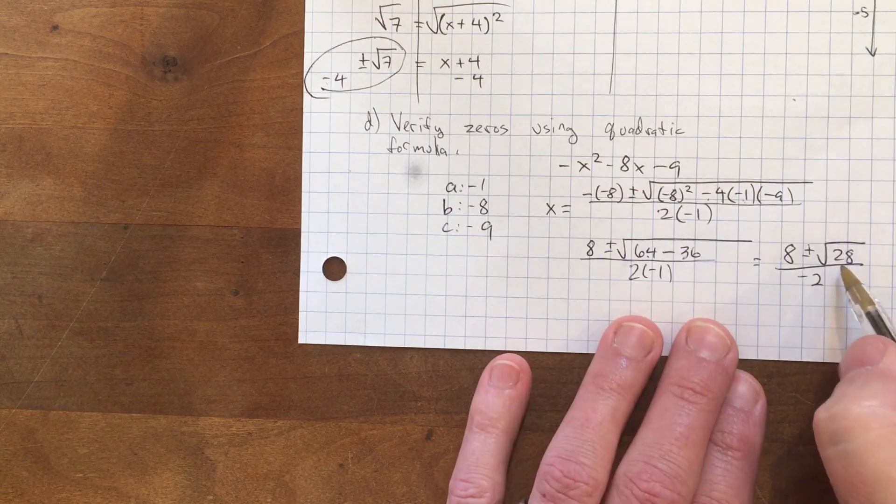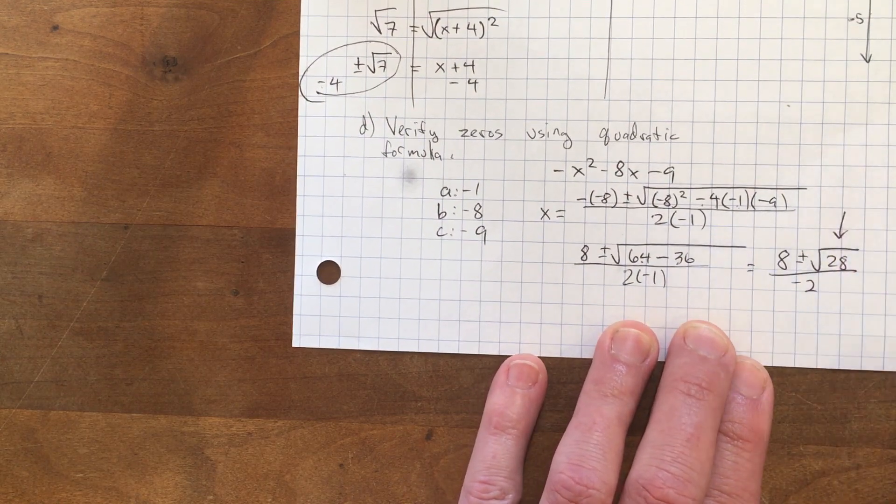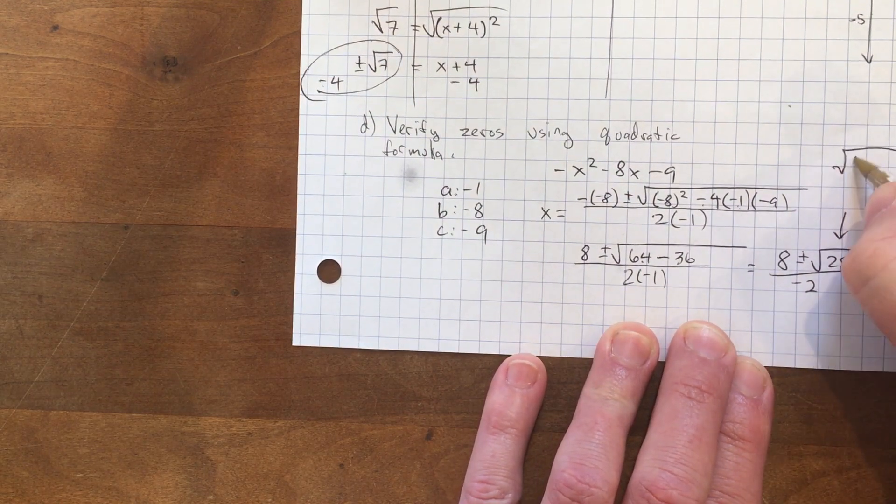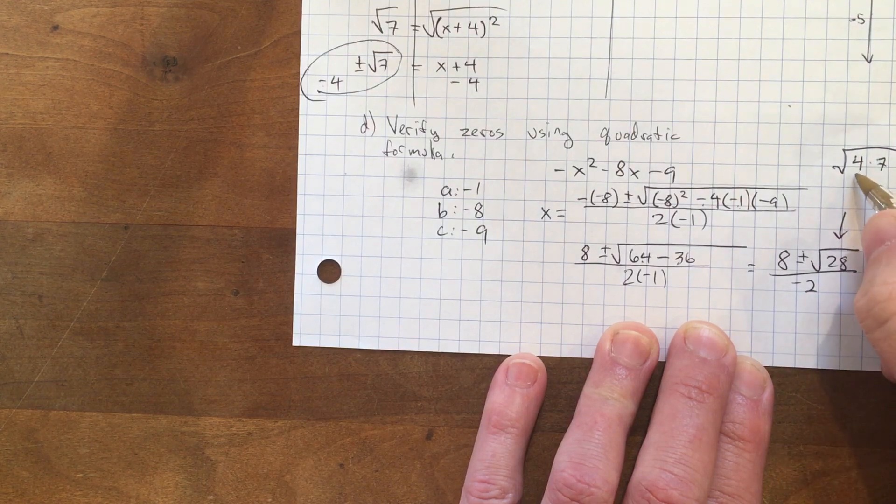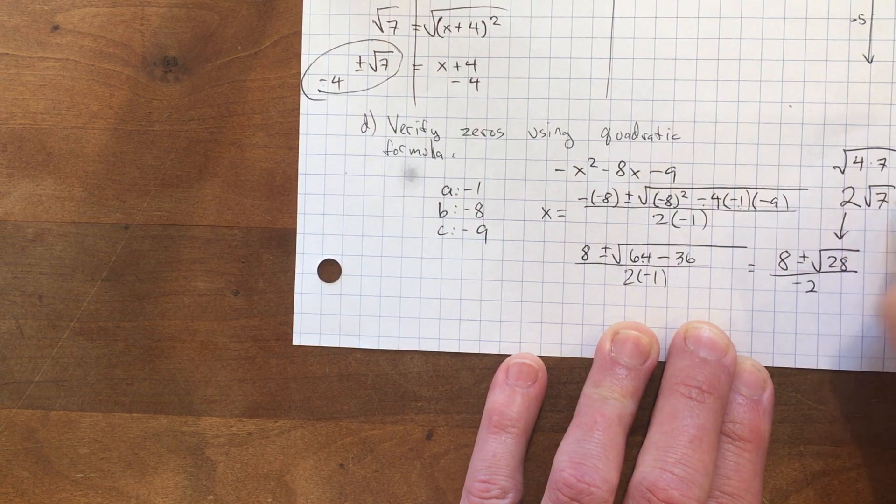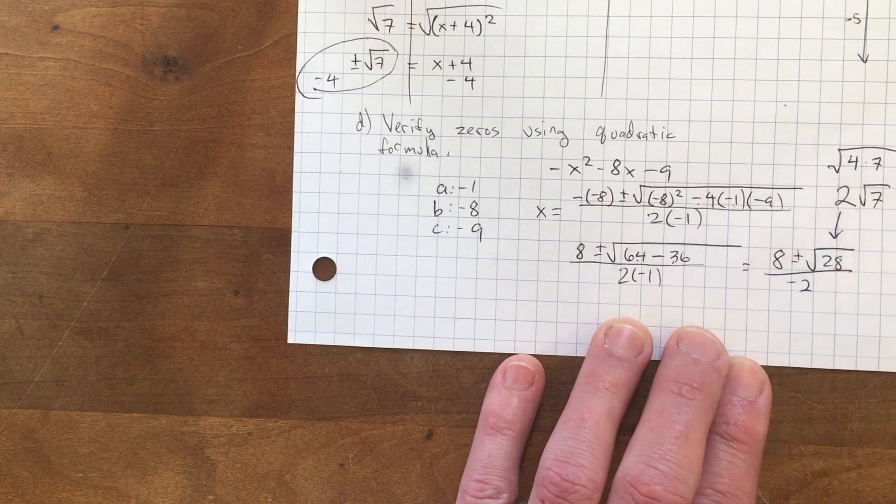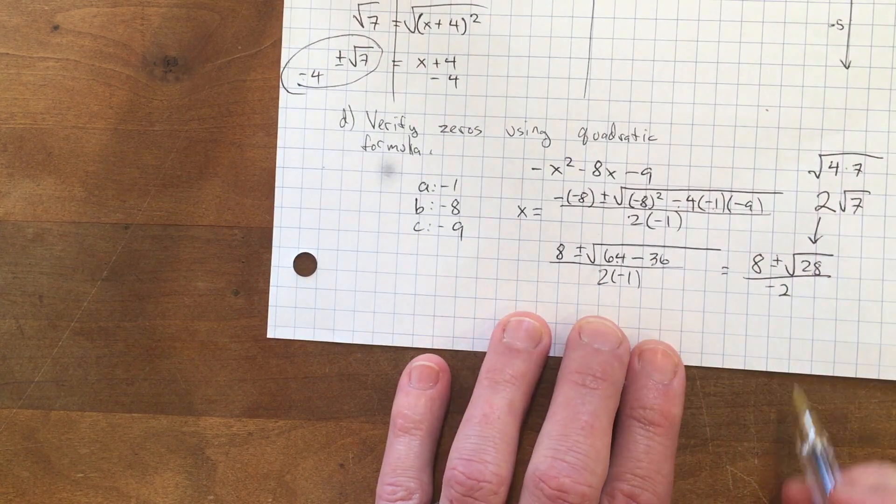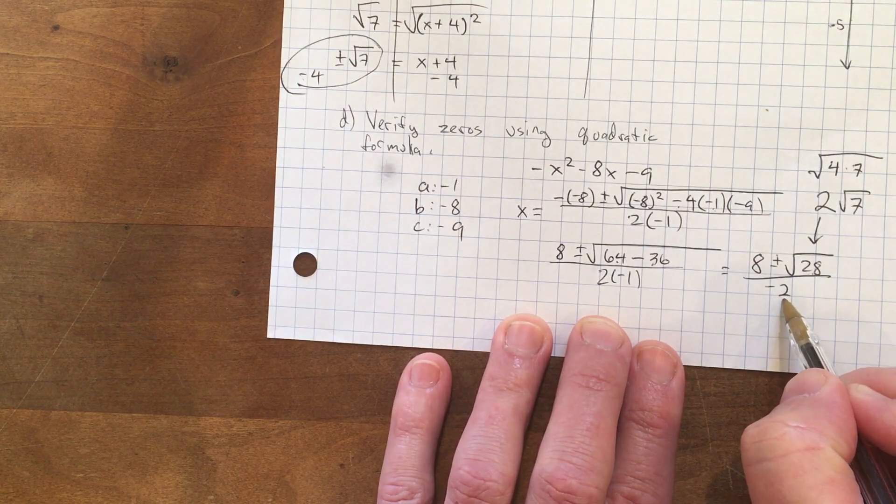Remember back in irrational numbers, I taught you that you could separate that to be 4 × 7, and the square root of 4 is 2, so √28 is the same as 2√7.